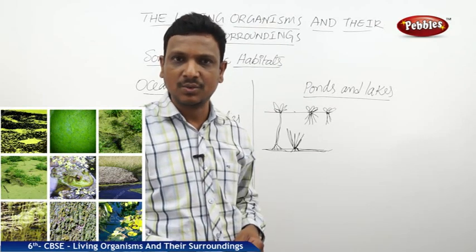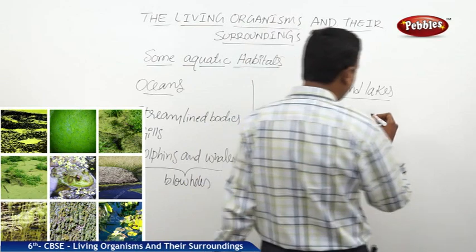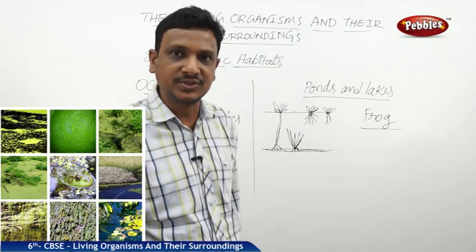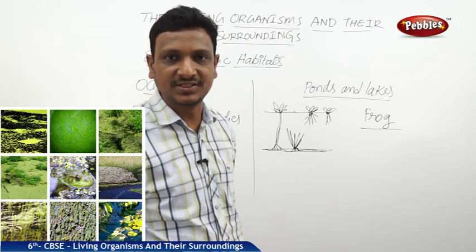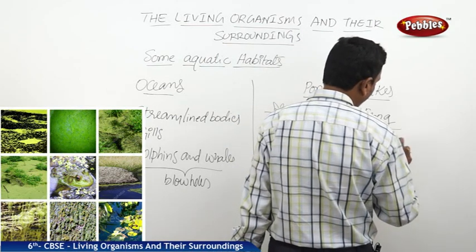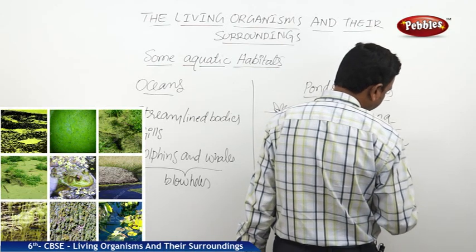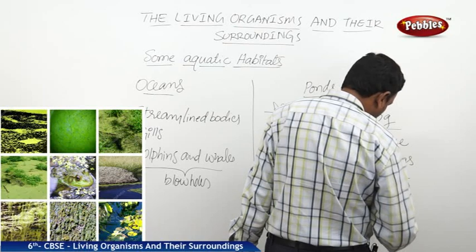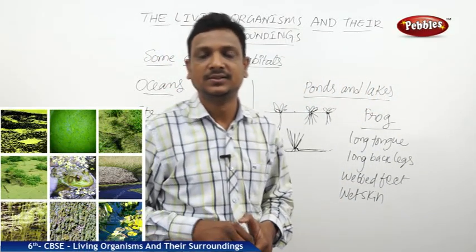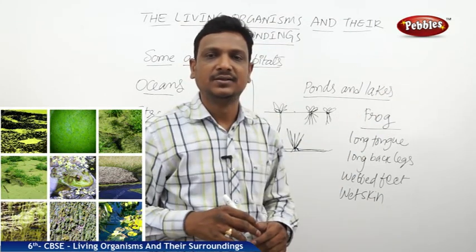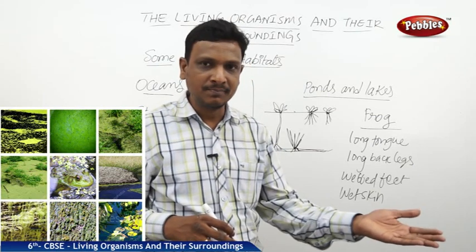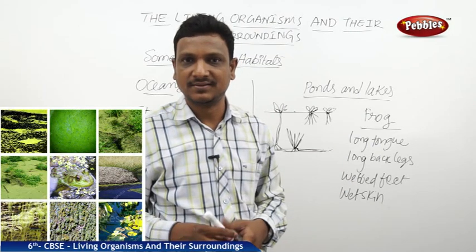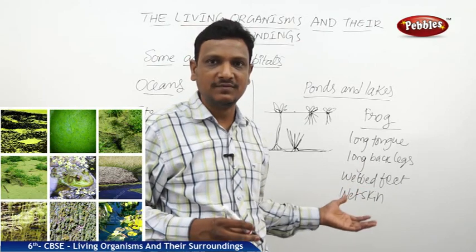Looking at animals in ponds, we find many types — including fish. The most interesting animal is the frog. Frogs can live inside and outside the pond. They have long back legs for jumping to catch prey, a long tongue, webbed feet, and wet skin. With wet skin, they can breathe even in the water. Because of long legs, they can take a very long leap to catch prey, jumping from one lotus leaf to another. All these features help frogs to live inside and outside the pond.